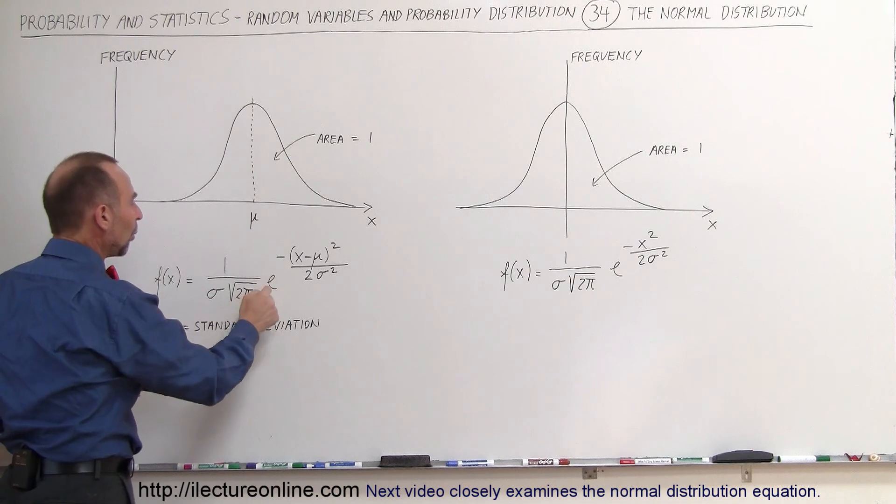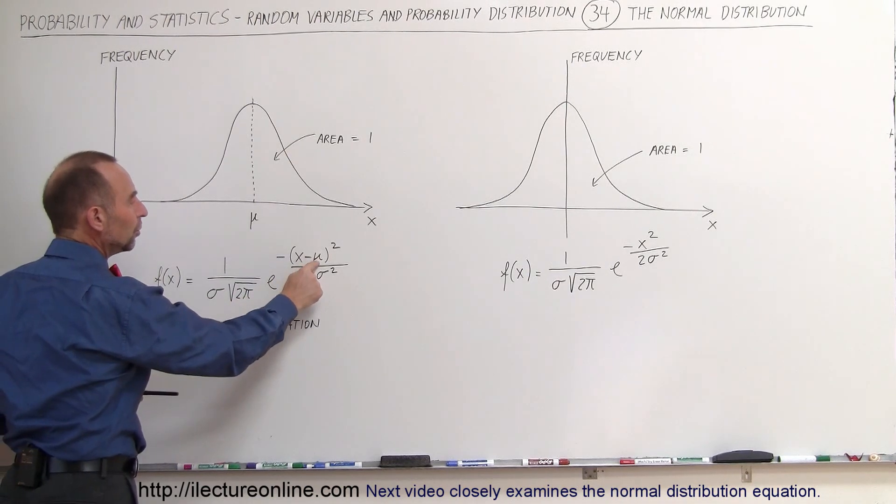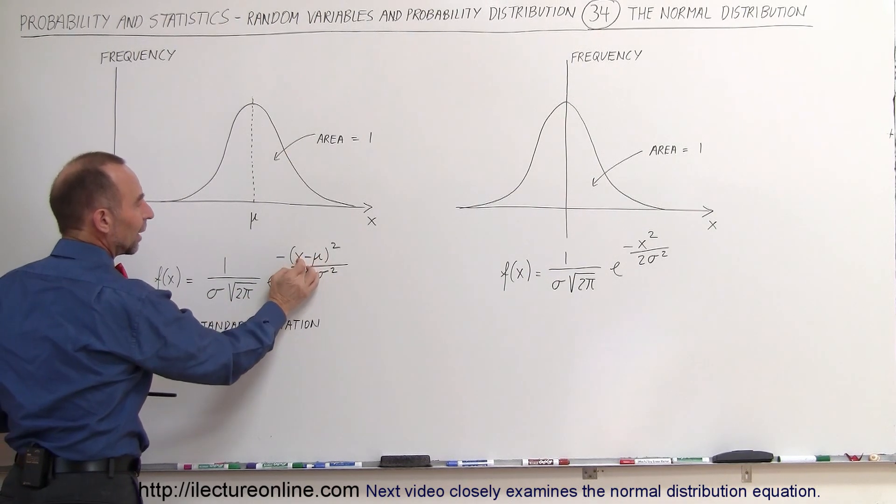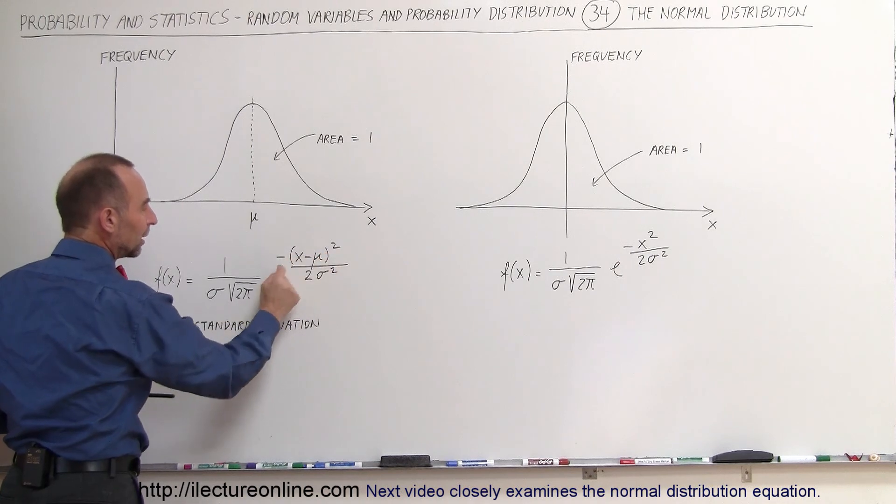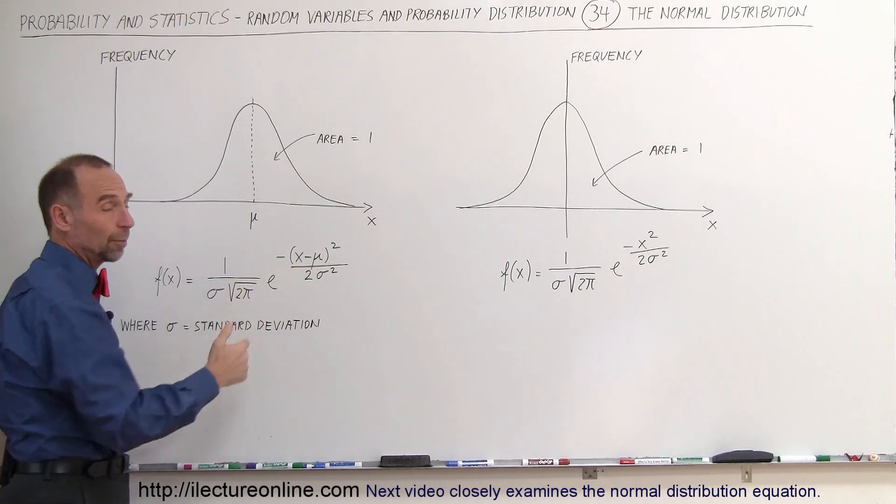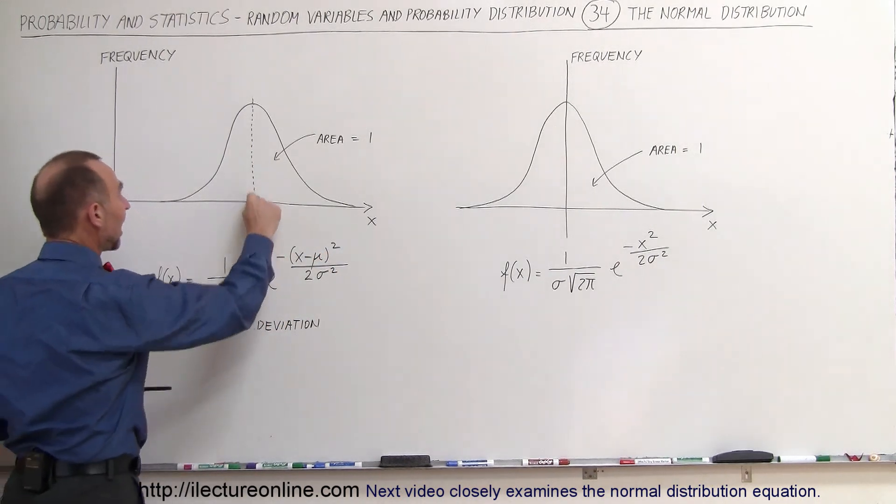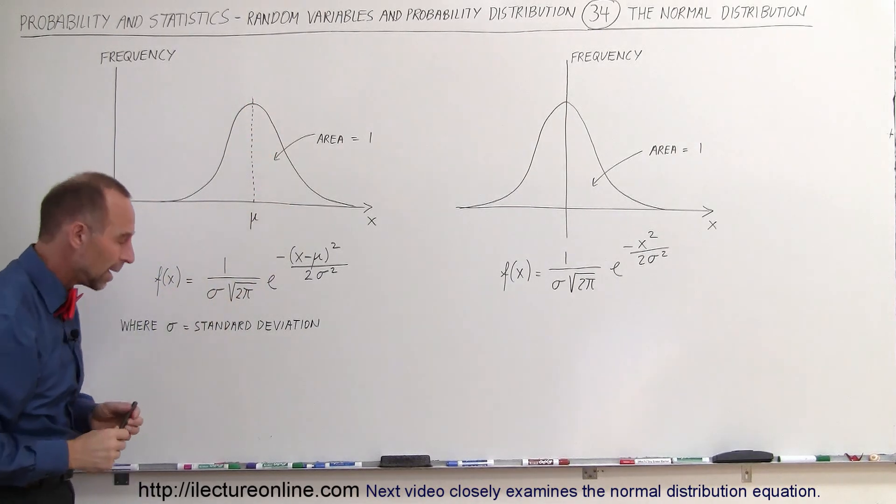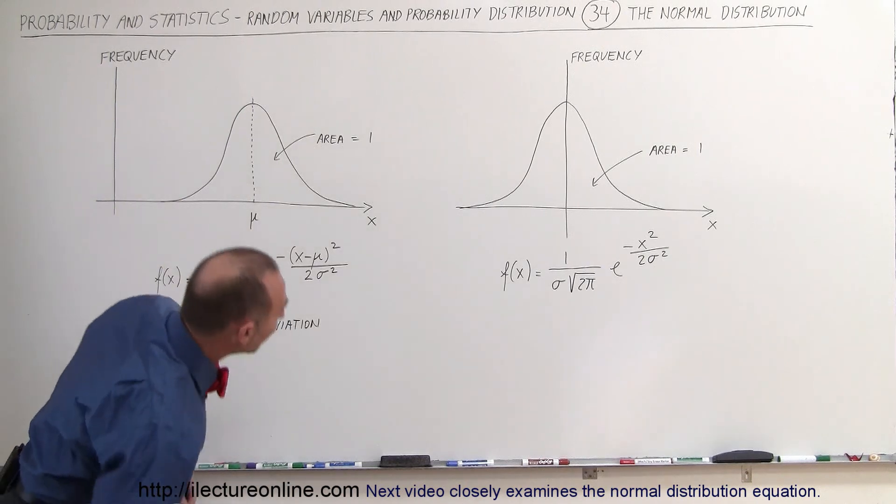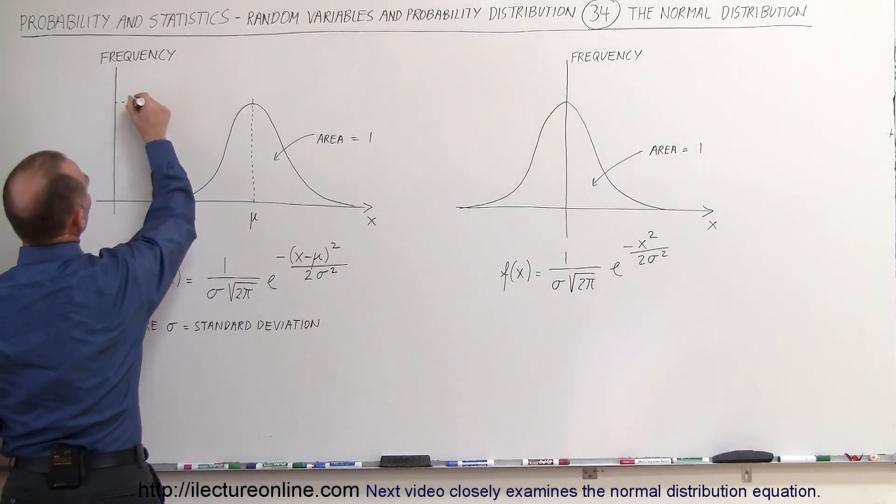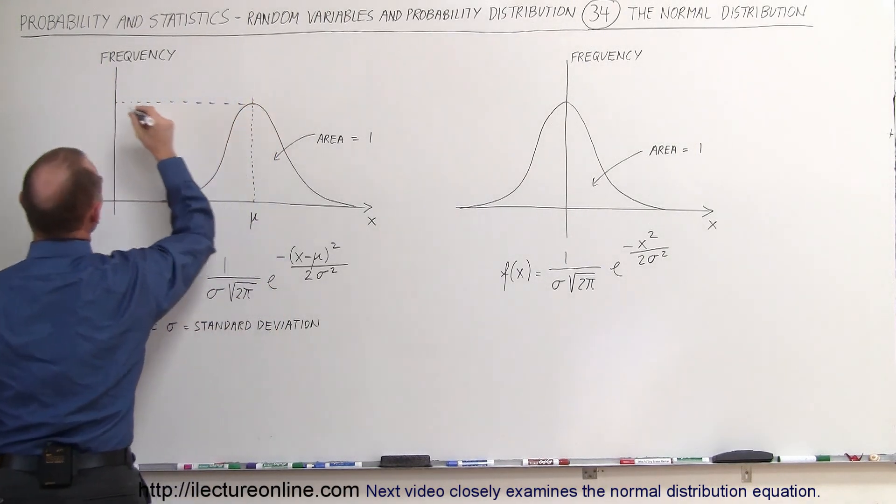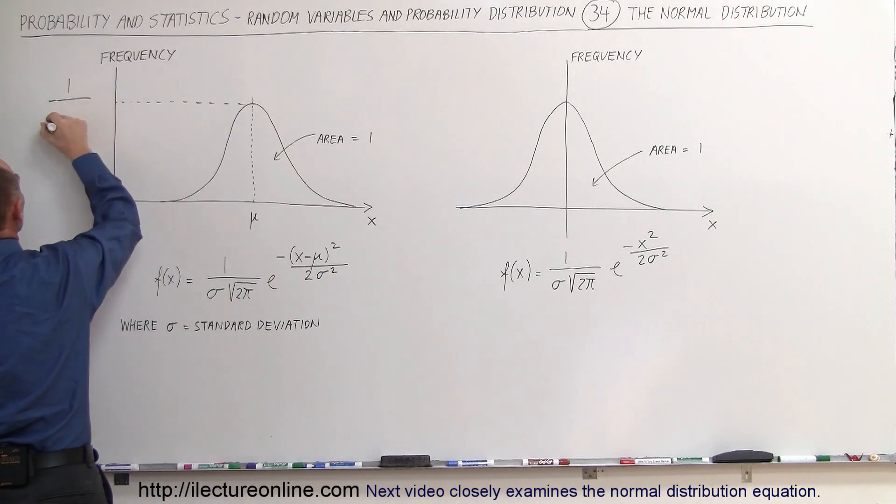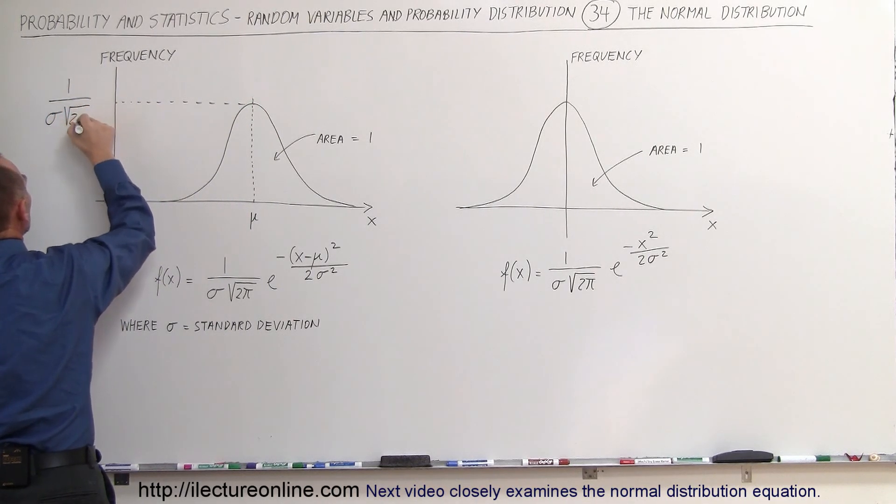This right here, when x equals mu, so when that x minus mu is equal to 0, then we have e to the 0 power. E to the 0 power is of course 1, which means that the height of this curve right here at the center would be equal to 1 over sigma times the square root of 2 pi. So let me write that down, that's probably a good thing to know. So the highest point on the normal curve right there would be equal to 1 over sigma times the square root of 2 pi.